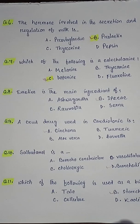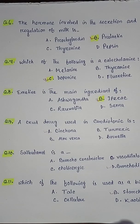Question number nine: a crude drug used is — option A ipecac, option B synchronic, option C aloe vera, option D bus. So the correct answer is option A synchronic.